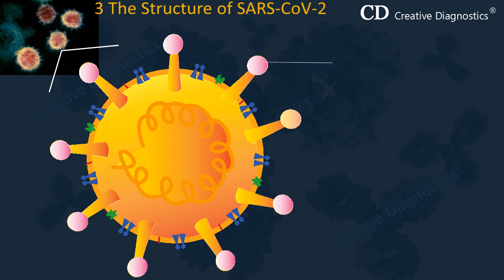The spike protein projects through the viral envelope and forms the characteristic spikes in the coronavirus crown. It is heavily glycosylated, probably forms a homotrimer, and mediates receptor binding and fusion with the host cell membrane.